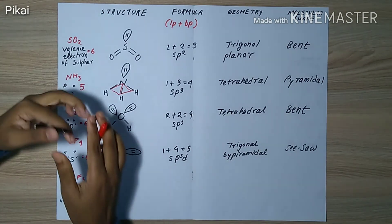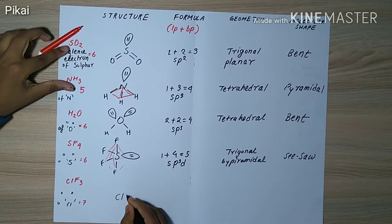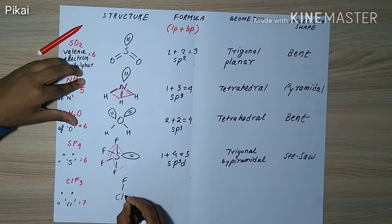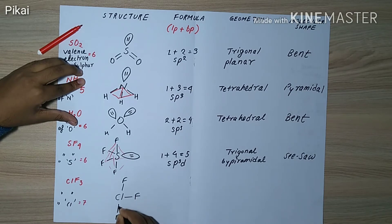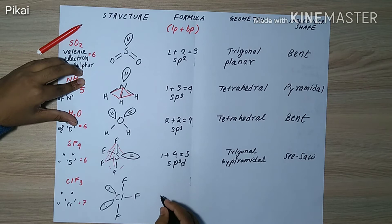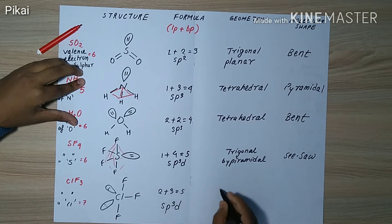For ClF₃, chlorine is the central atom with seven valence electrons. It forms three bonds, sharing three electrons with fluorine atoms. We are still left with four electrons, which form two lone pairs, each having two electrons.